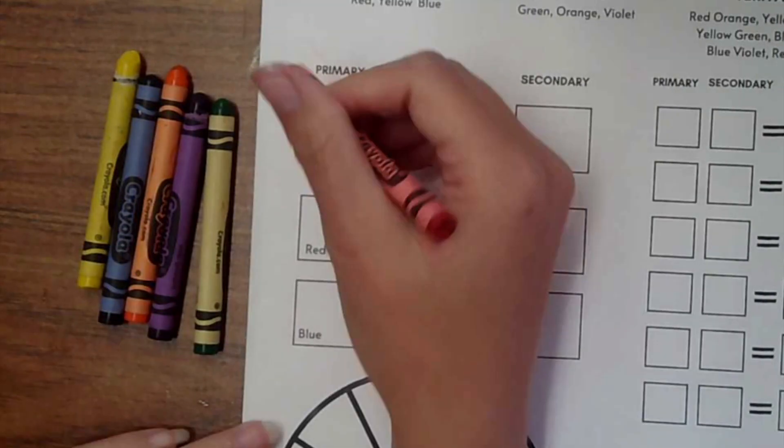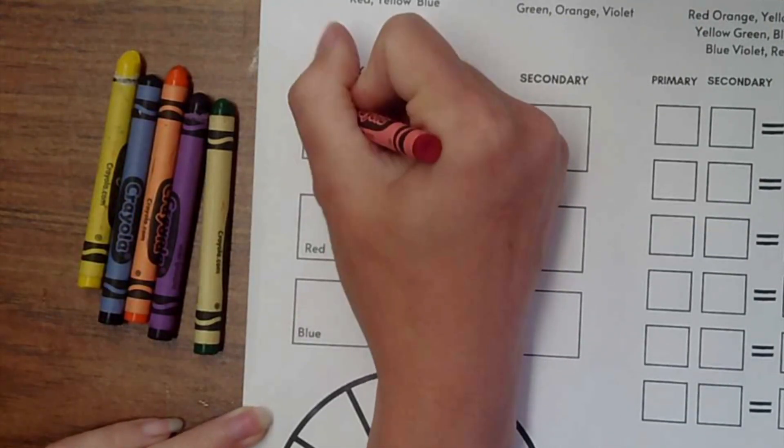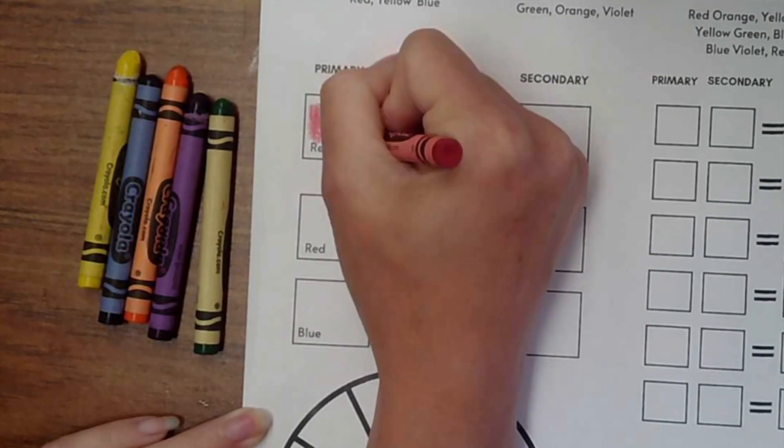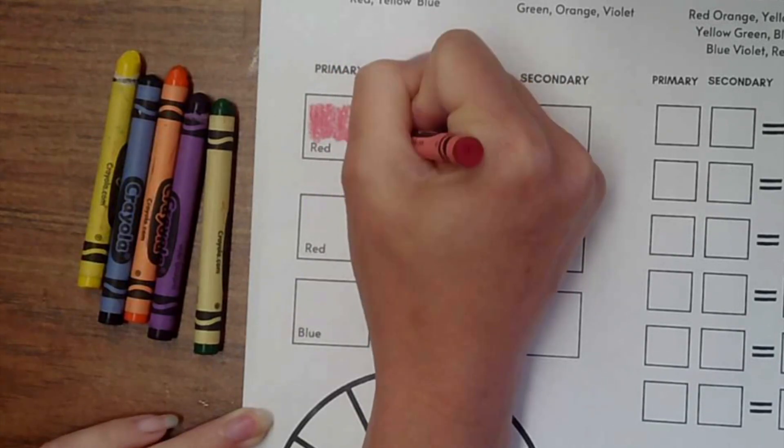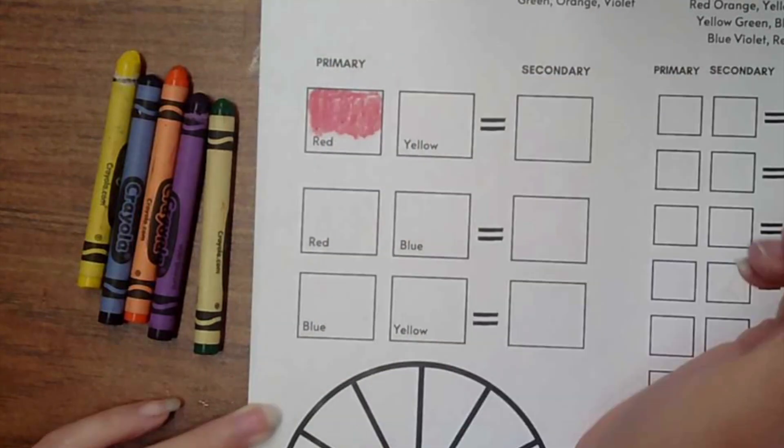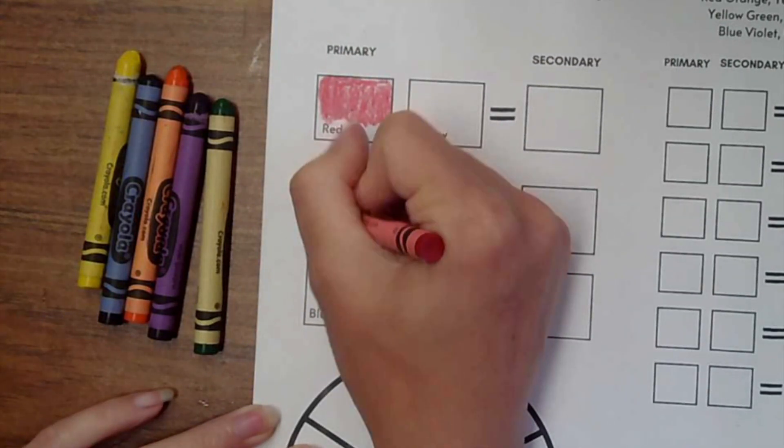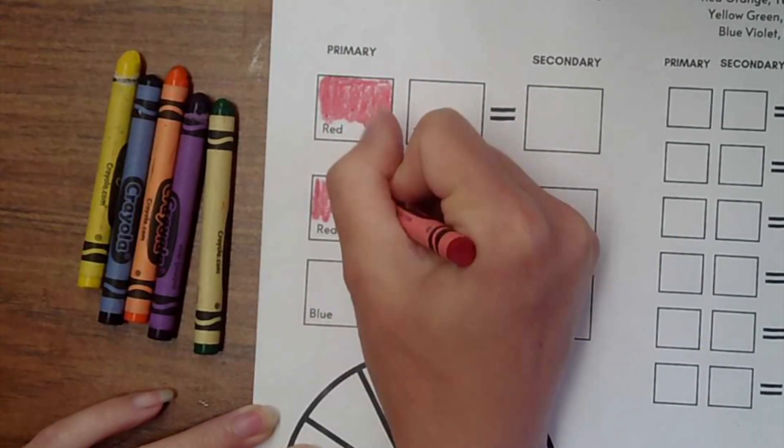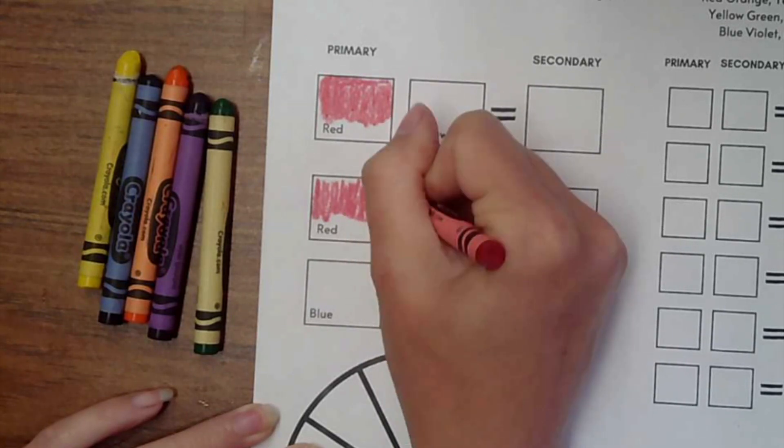I'm going to begin my color worksheet here in our workbooks, and I am just using the primary colors red, yellow, and blue, and the secondary colors green, orange, and violet. I am going to be coloring them in here in the appropriate boxes. I'm just using crayon—you could do this with colored pencil as well.